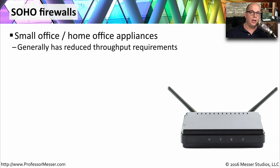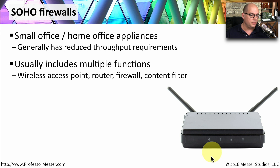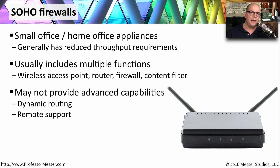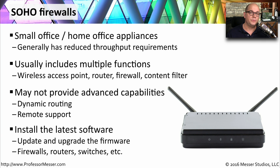Most routers in a small office or home office are not only a router but also have firewall functionality built in. There are also third-party firewalls specifically designed for SOHO environments, most of which include a wireless access point, router, firewall capabilities, and content filtering for URLs or URL categories. These devices generally don't provide dynamic routing support, and there may not be an easy way to provide support for third parties. One best practice for any of these devices is to always make sure you have the latest firmware installed — check all your firewalls, routers, switches, and other components and make sure they're using the latest version of software from the manufacturer.